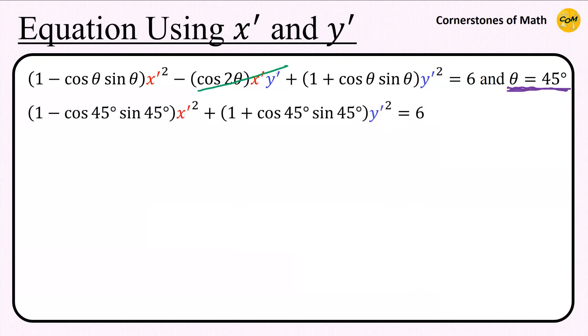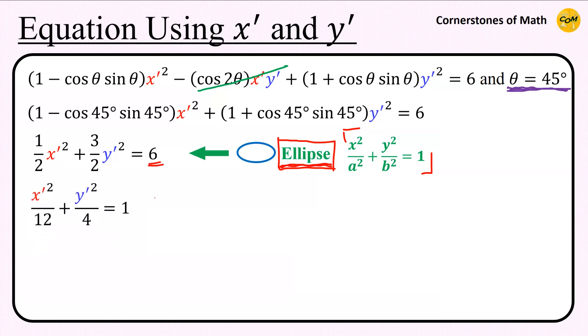This equation simplifies to 1 over 2 x prime squared plus 3 over 2 y prime squared equals 6. So we have x prime squared and y prime squared terms having different coefficients, which is the equation of an ellipse. The standard equation of the ellipse looks like this. So by dividing both sides with 6, we have x prime squared over 12 plus y prime squared over 4 equals 1.